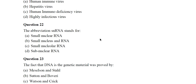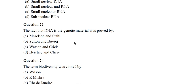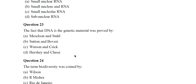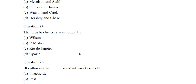Question 22: The abbreviation snRNA stands for small nuclear RNA. Question 23: The fact that DNA is the genetic material was proved by Hershey's experiment. Question 24: The term 'biodiversity' was coined by Wilson. This is the correct answer.